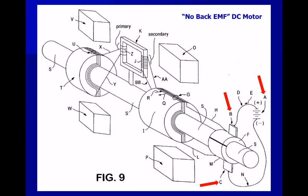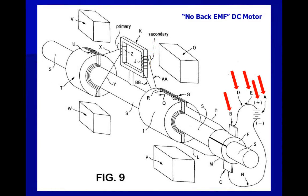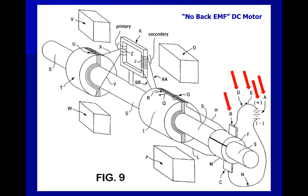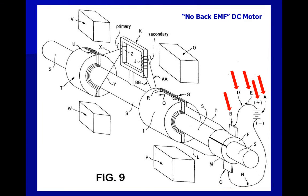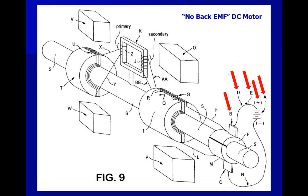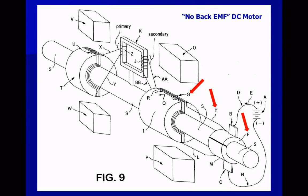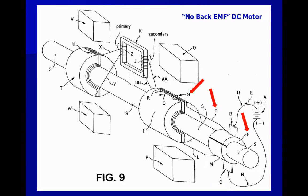A DC source A is connected to the motor at brushes B and C. This completes a circuit causing a current to flow in the following manner: current flows from the positive terminal of A, indicated by the plus symbol, to brush B through conductor D in the direction of arrow E. Current then enters commutator segment F and travels to main armature winding G through conductor H.